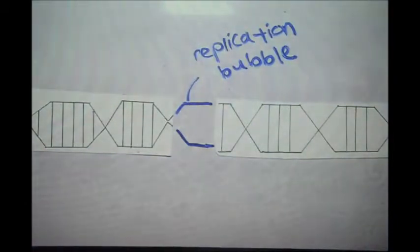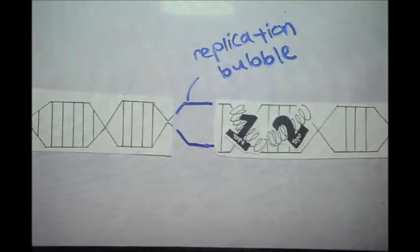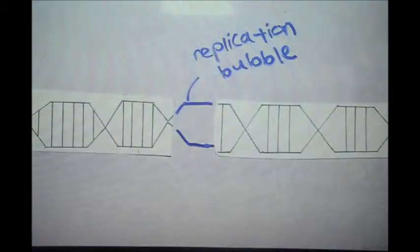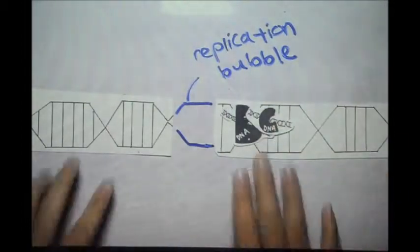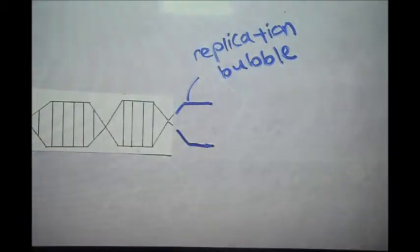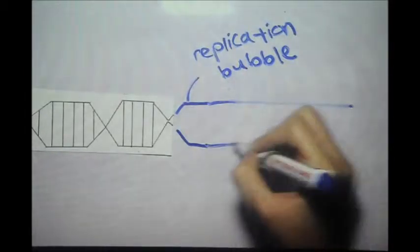Topoisomerase comes in to relieve the winding strain downstream of the template by causing transient breakage in the nucleotide backbone. The unwinding process is then continued when DNA B helicase unwinds DNA template with the help of DNA C.